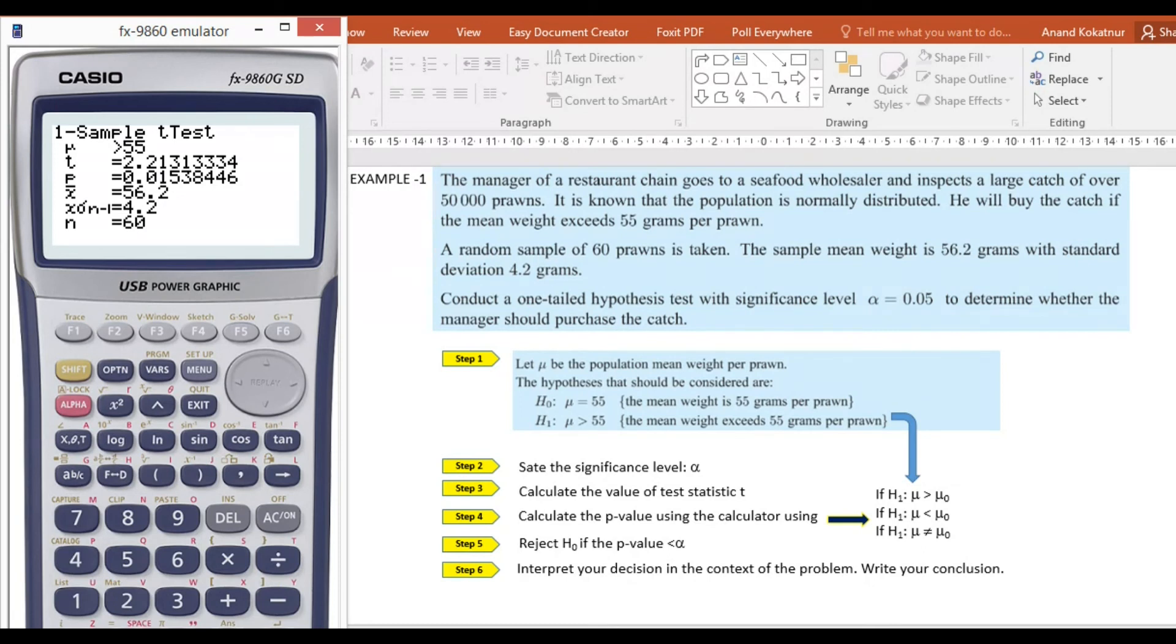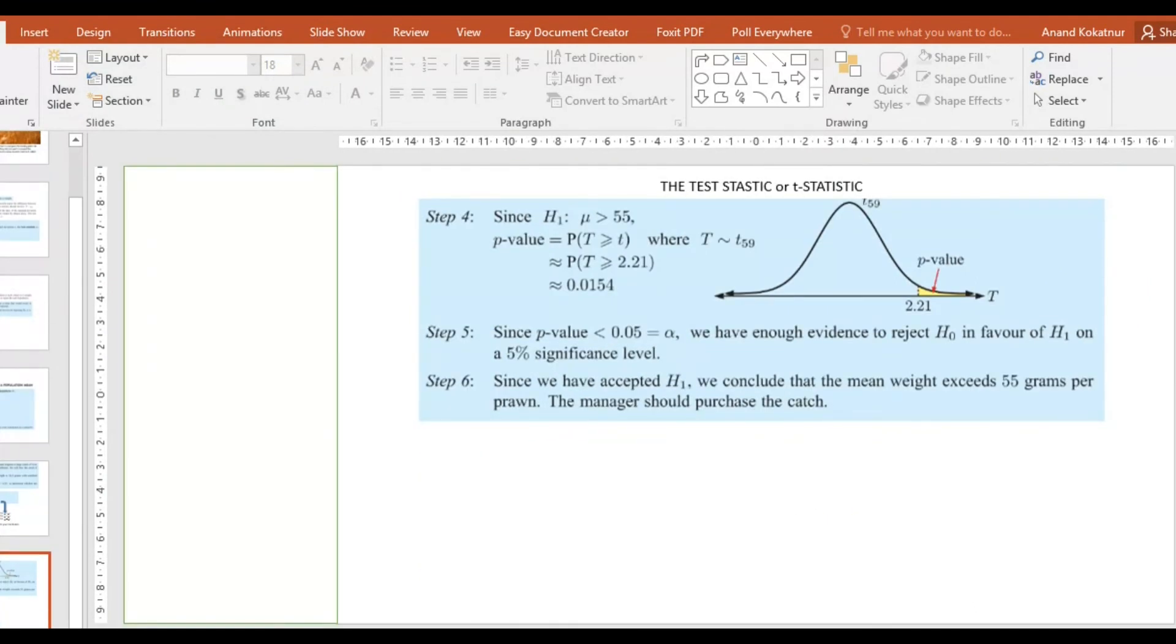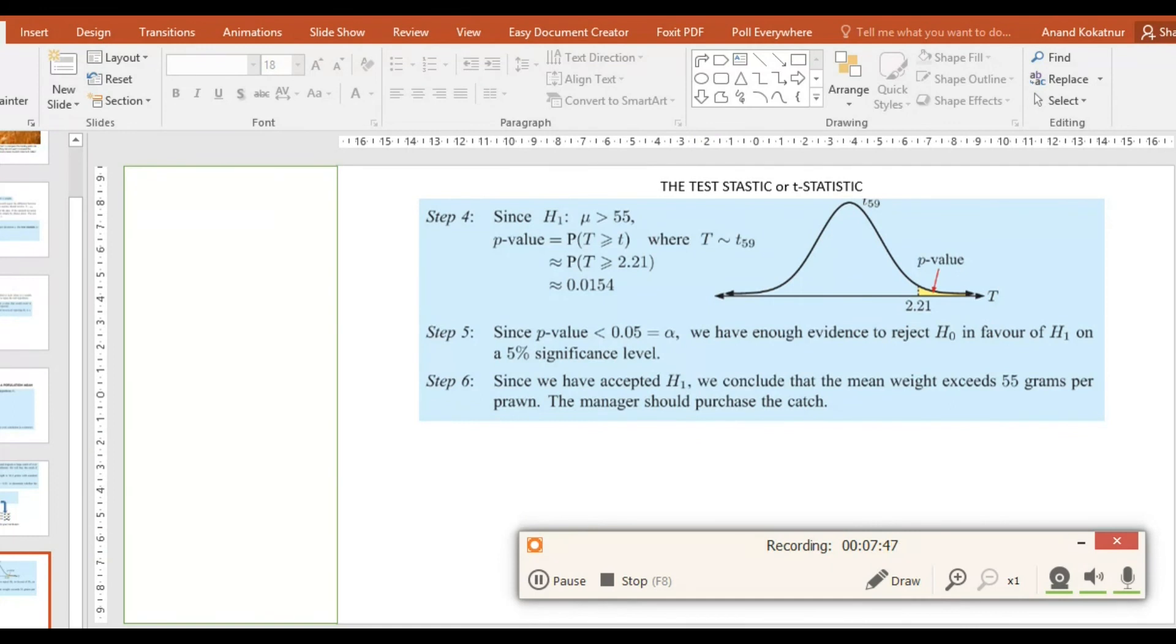Now we got those two values. Now we are going to make our decision. As you can see here, the p-value is less than 0.05, which was our significance level we decided at the beginning of this test. And if it is below, we have enough evidence to reject the null hypothesis in favor of H₁. Therefore, we accept H₁. Since we have accepted the alternative hypothesis, we can conclude that the mean weight exceeds 55 grams per prawn, and therefore the manager could purchase the catch. In the examination, based on your calculation, you compare it with the significance value and then make a statement about the suggestion depending on the scenario.